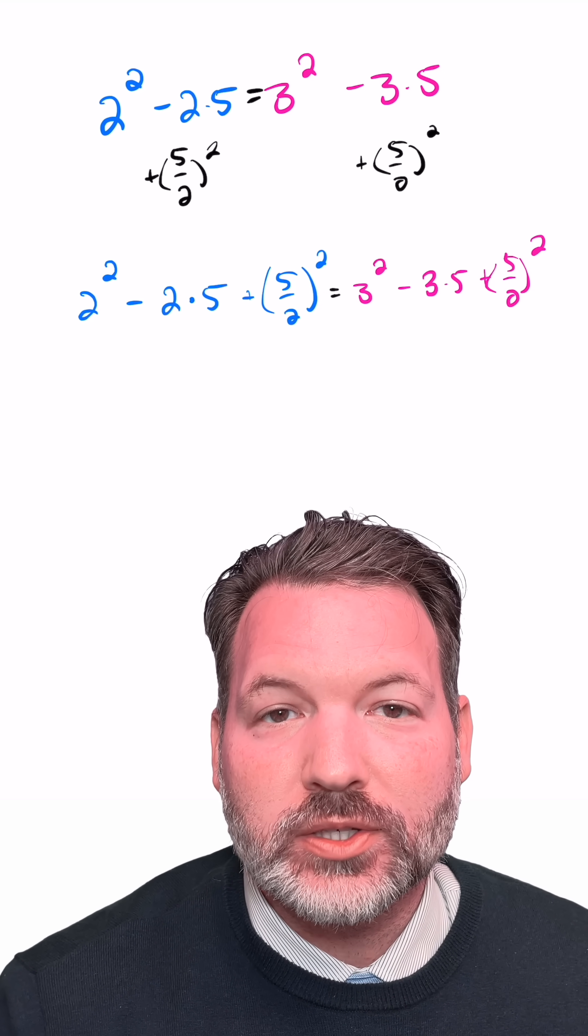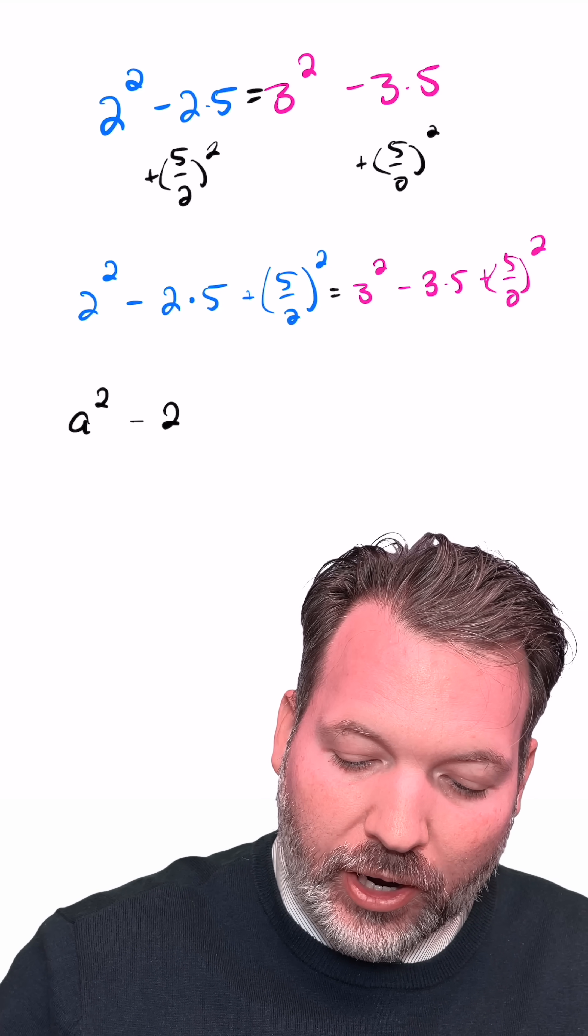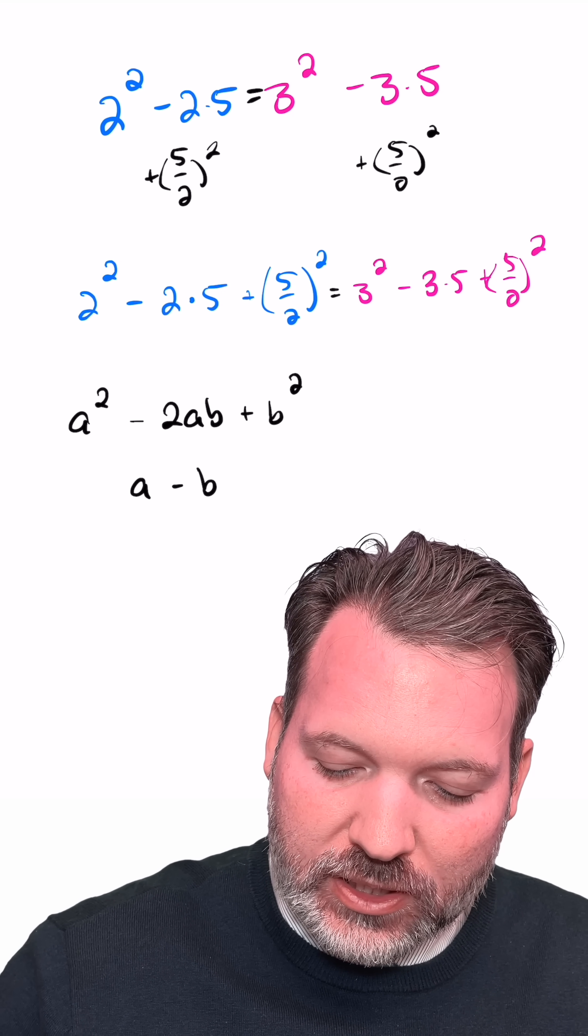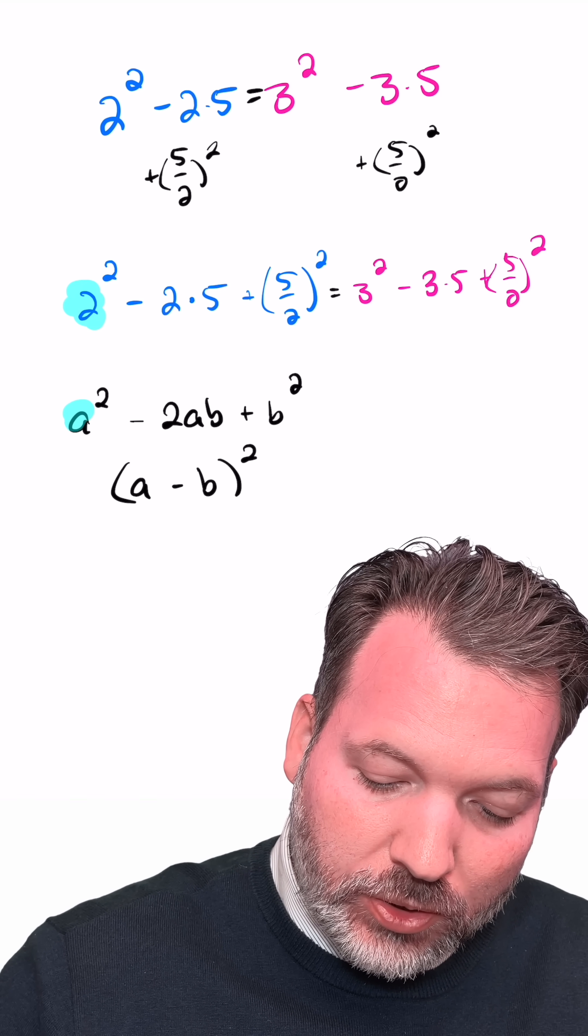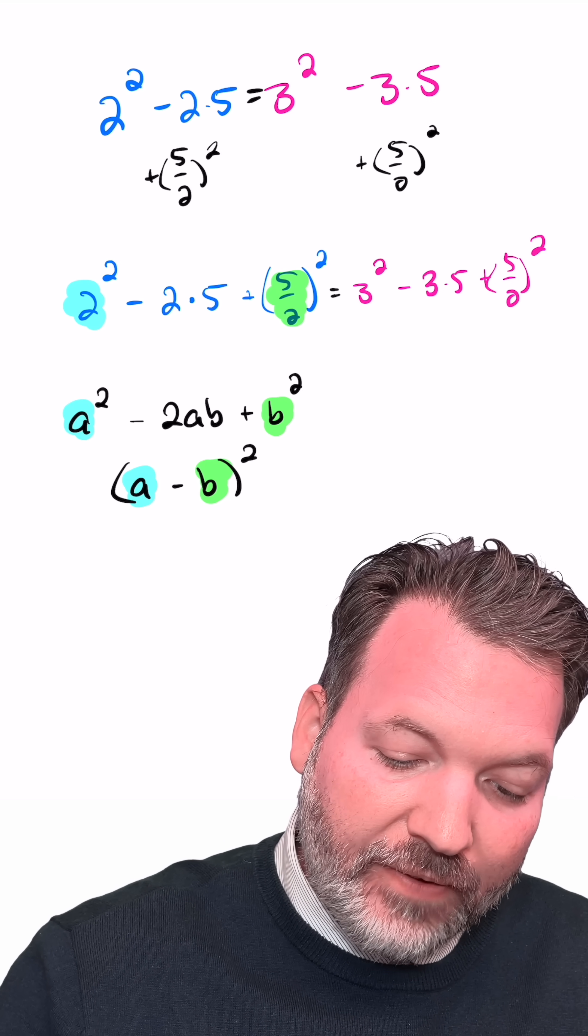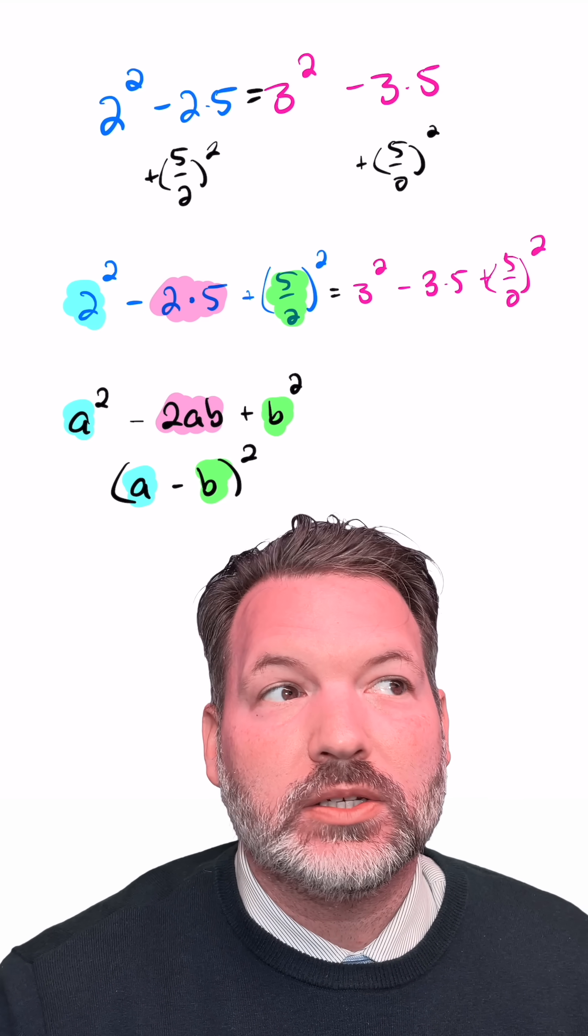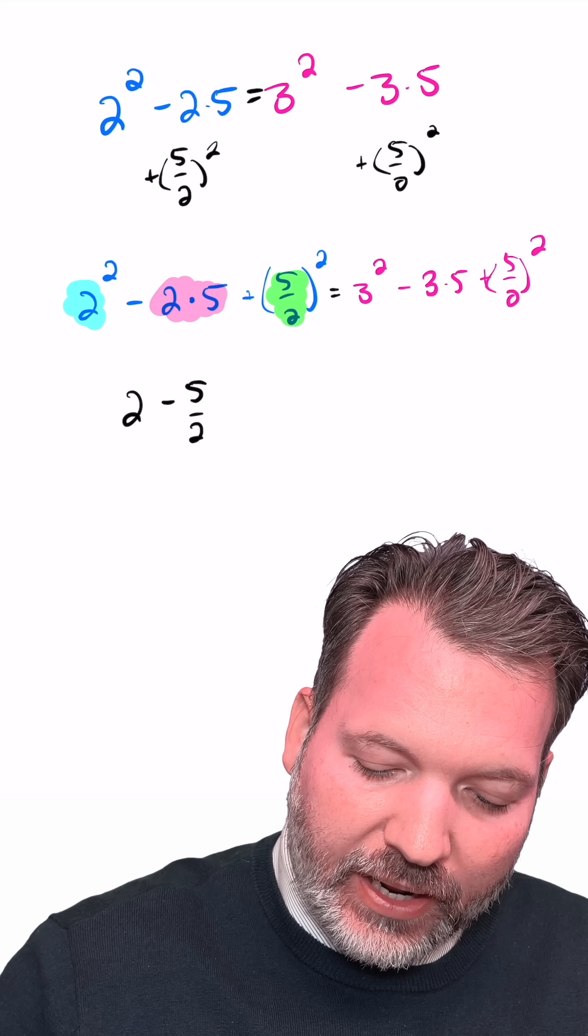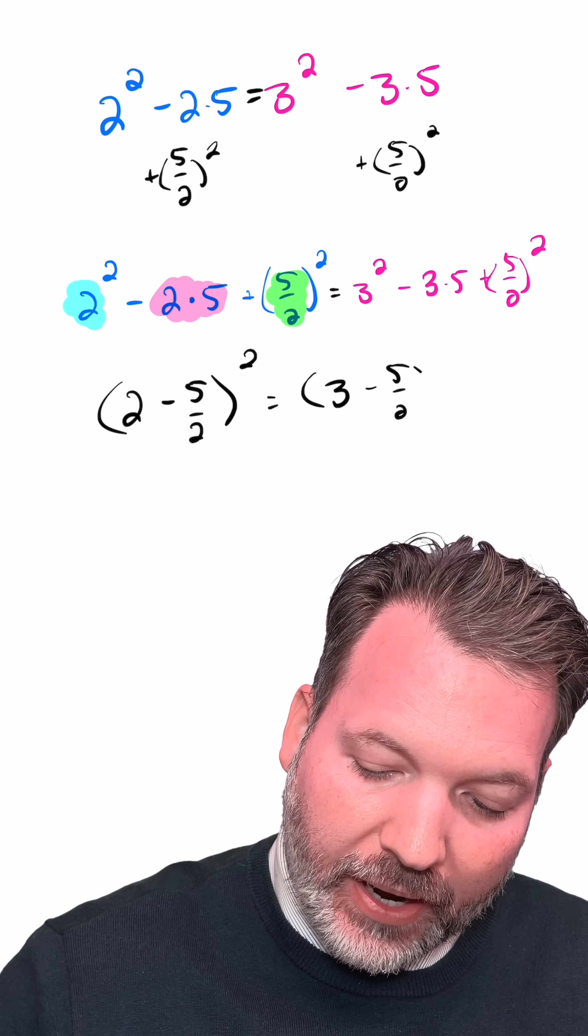Now, the reason I chose 5 halves squared is there's a particular squaring pattern that says if we have some a squared minus 2 times a times b plus b squared, this is actually the same as a minus b squared. You can see in this sense, essentially what I'm doing is I've set a equal to 2. I've set b equal to 5 halves. And then the part in the middle here, 2 times 5, is actually the same thing as 2 times 2 times 5 halves. Meaning, I can rewrite this left side as 2 minus 5 halves squared and this right side as 3 minus 5 halves squared.